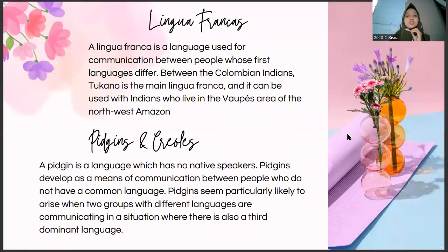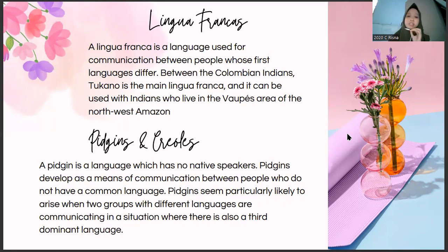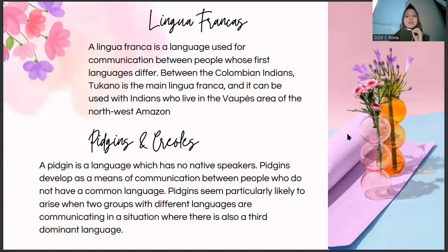Next, we move to the material on lingua franca and also pidgins and creoles. A lingua franca is a language used for communication between people whose first languages differ. Among the Colombian Indians, Tucano is the main lingua franca, and it can be used with Indians who live in the southwest area of the northwest Amazon on both sides of the border between Colombia and Brazil. In some countries, the most widely used lingua franca is an official language or the national language. In multilingual communities, lingua francas are so widely used that they may eventually displace the vernaculars. Lingua francas often developed initially as trade languages, illustrating again the influence of economic factors on language.